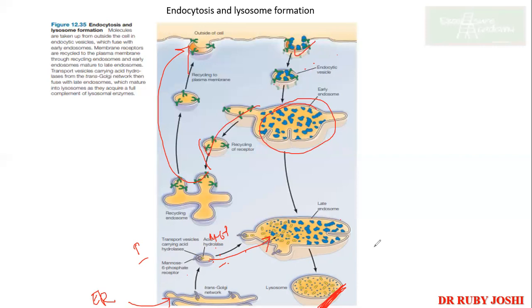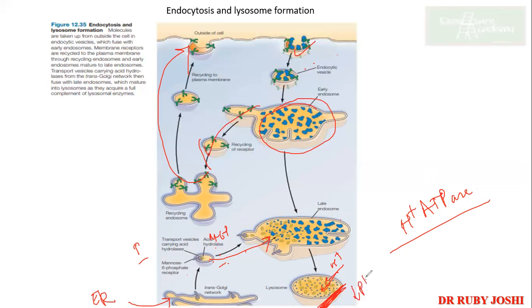Student question: Is the lysosome's pH lower because of the acid hydrolases? No — the lysosomal pH is low because of the H+ ATPase present on the lysosomal membrane. Its job is to take all those H+ ions from the cytoplasm into the lysosome. The low pH is what makes the acid hydrolases active.